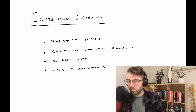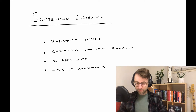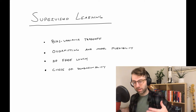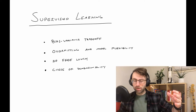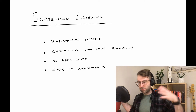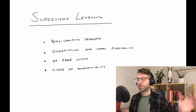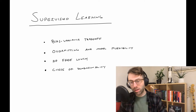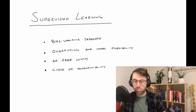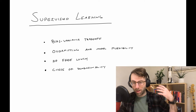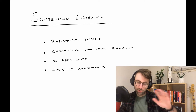Welcome back to another video. The main topic of this video is going to be something called the bias-variance trade-off, but I wanted to talk about a few other related concepts, so we're going to call this a supervised learning concepts video. We're mostly going to talk about the bias-variance trade-off, but it relates to overfitting and model flexibility.